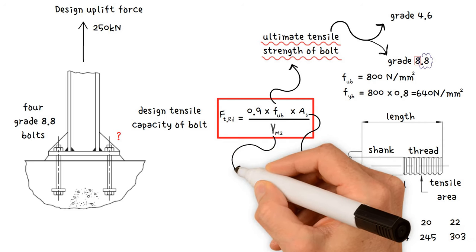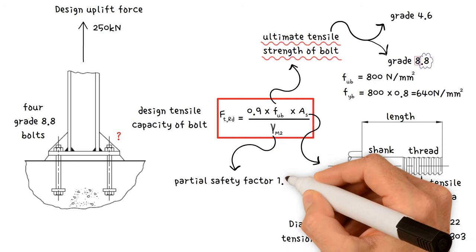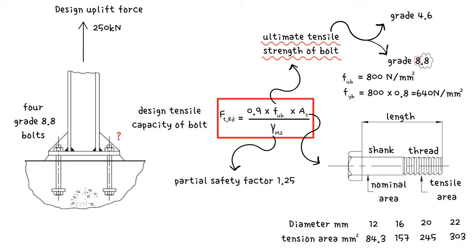Gamma M2 is partial safety factor 1.25. So, for our worked example, what bolt diameter is required?